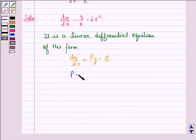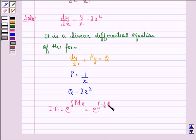where P = -1/x and Q = 2x². Integrating factor will be e^(∫P dx), that is e^(∫-1/x dx),